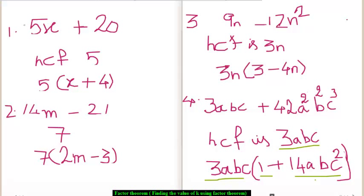To do so, we first find the highest common factor of 5x and 20. The highest common factor of 5x and 20 is 5. So we take 5 common, and then we divide 5x by 5 to get x as the quotient, and 20 divided by 5 to get 4 as the quotient.